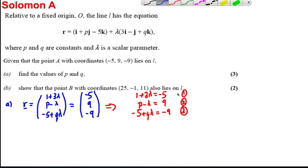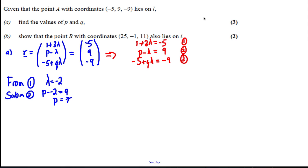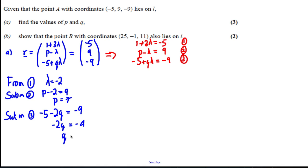Starting with equation 1, since it has only one variable: subtracting 1 from both sides and dividing by 3, λ is clearly equal to negative 2. Substituting into equation 2: P subtract negative 2 equals 9, i.e. P plus 2 equals 9, so P equals 7. Then substituting into equation 3: negative 5 subtract 2Q equals negative 9. Adding 5 to both sides gives negative 2Q equals negative 4, so Q equals 2.